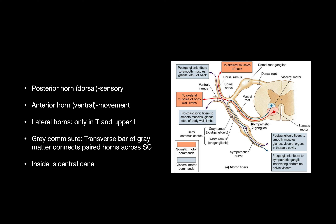The anterior horn and associated rami and trunks is also called the ventral. I will be using these terms interchangeably because professors use them interchangeably and it's good to know. The posterior horn or dorsal horn is involved in sensory information, and the lateral or anterior horn is associated with movement information.